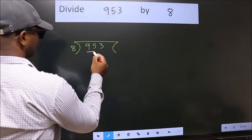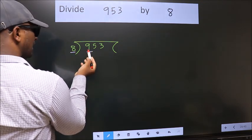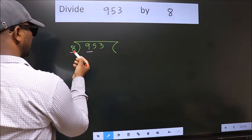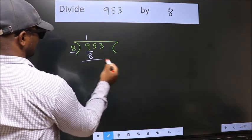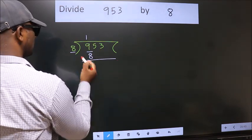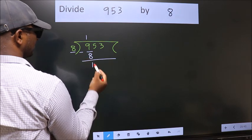Here we have 9. Here 8. A number close to 9 in 8 table is 8 once 8. Now we should subtract. We get 1.